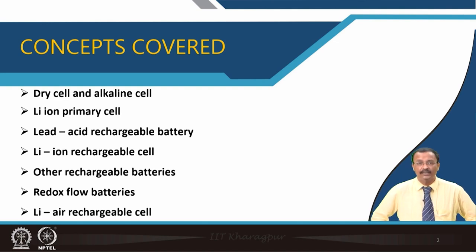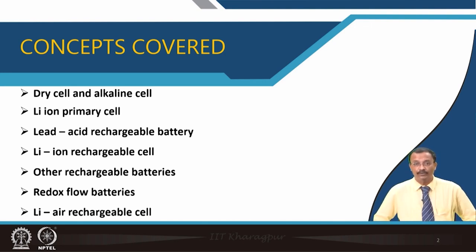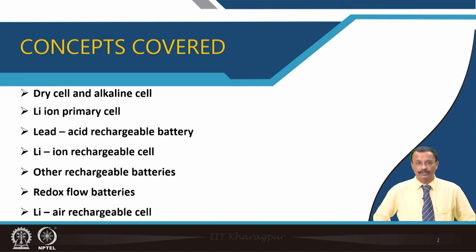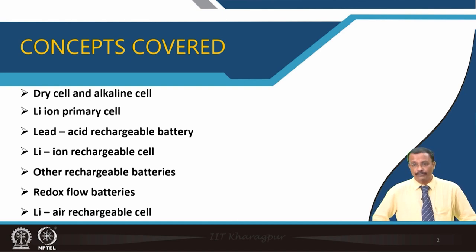In this particular lecture we will talk about dry cell and alkaline cell, which you can purchase from the market. Also, the lithium primary cell that comes in the form of a small button. Lead acid rechargeable battery — which you use in your scooter or motorcycle for ignition and lighting. Then we will introduce the lithium rechargeable cell, a very hot topic nowadays particularly for electric vehicles. Certain other rechargeable batteries including the redox flow battery will also be introduced and elaborated in a later part of the course.